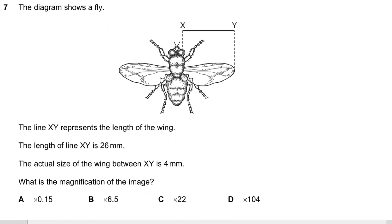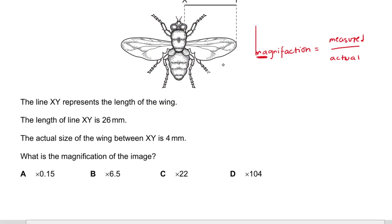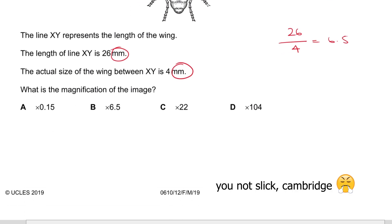Question 7: The diagram shows a fly. Line XY represents the wing length: the measured length is 26 mm and the actual size is 4 mm. Magnification = measured length ÷ actual length, so 26 ÷ 4 = 6.5. Always make sure units are the same, as examiners like to use different units as a trick.